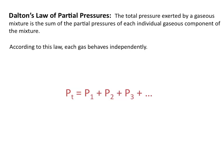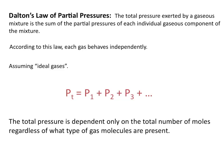According to this law, each gas behaves independently. Now we know this isn't exactly the case, but this law assumes ideal gases. This law also tells us that the total pressure is dependent only on the total number of moles present, regardless of what types of gas molecules are present.